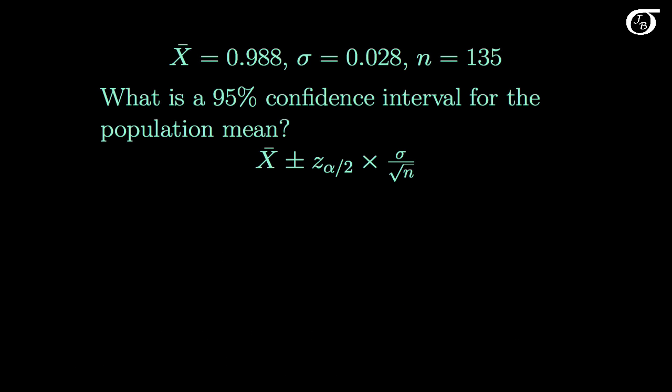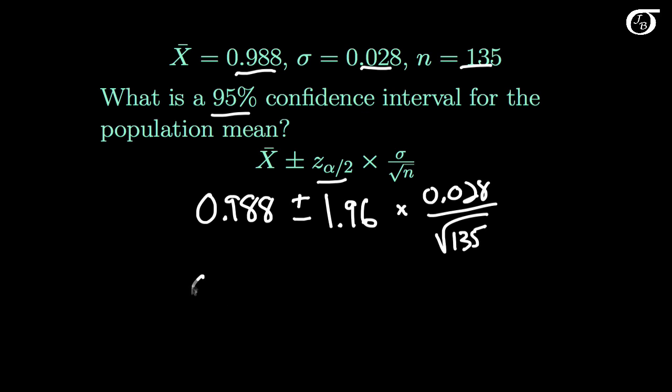So we can go ahead now and calculate the interval. We want a 95% confidence interval for the population mean. Here is our usual formula, and we simply substitute these values in. The sample mean was 0.988, we add and subtract 1.96, and then we multiply that by sigma, which is 0.028, and divide by the square root of the sample size n. This works out to 0.988 plus and minus 0.0047. If we carry out the addition and subtraction, we get a 95% confidence interval for mu of 0.983 to 0.993.